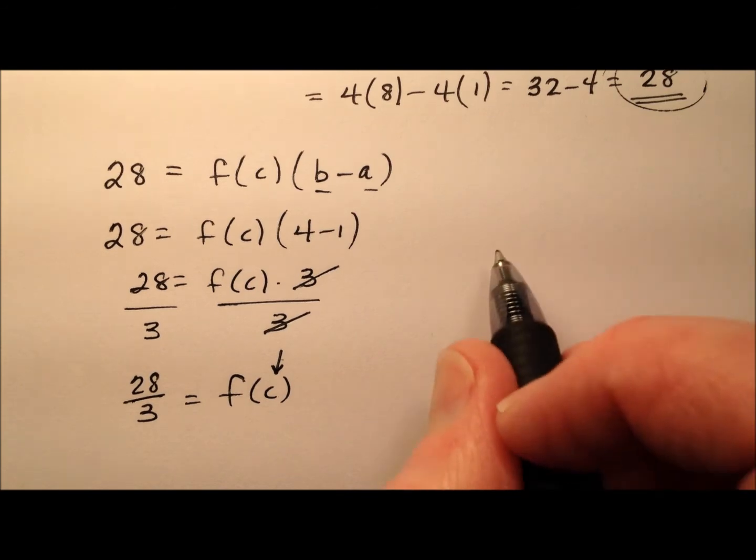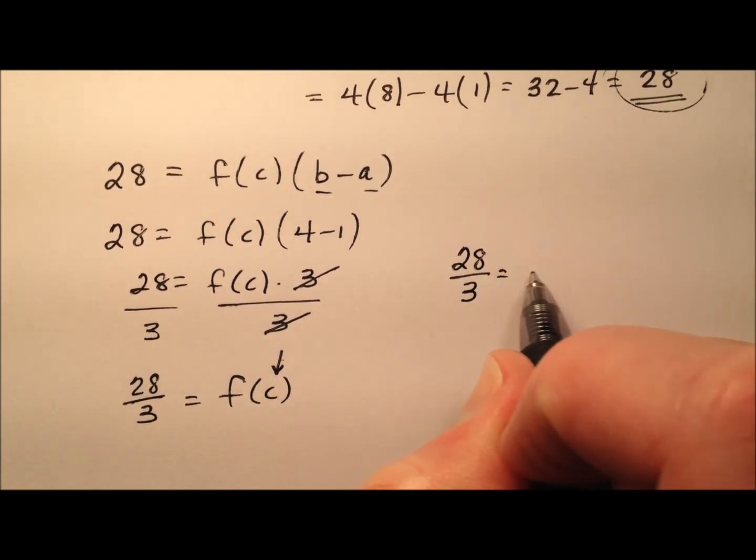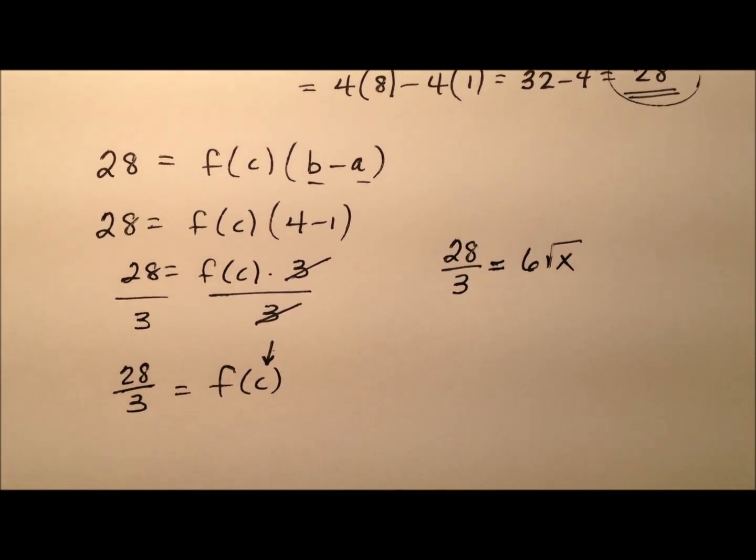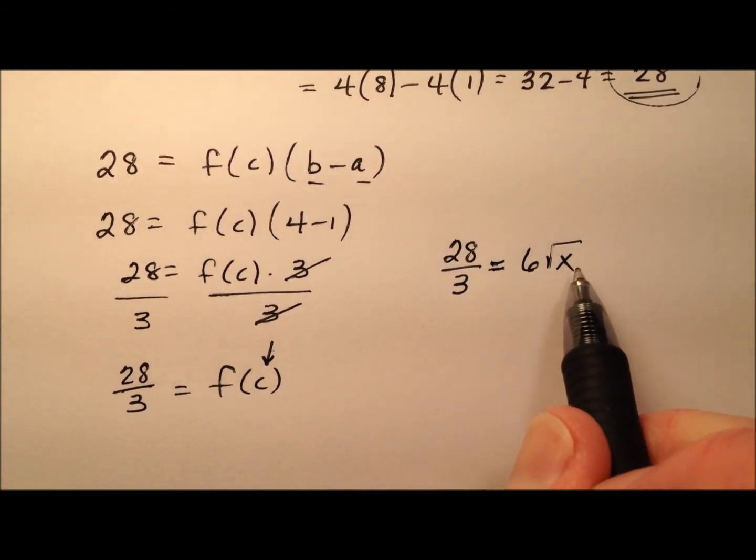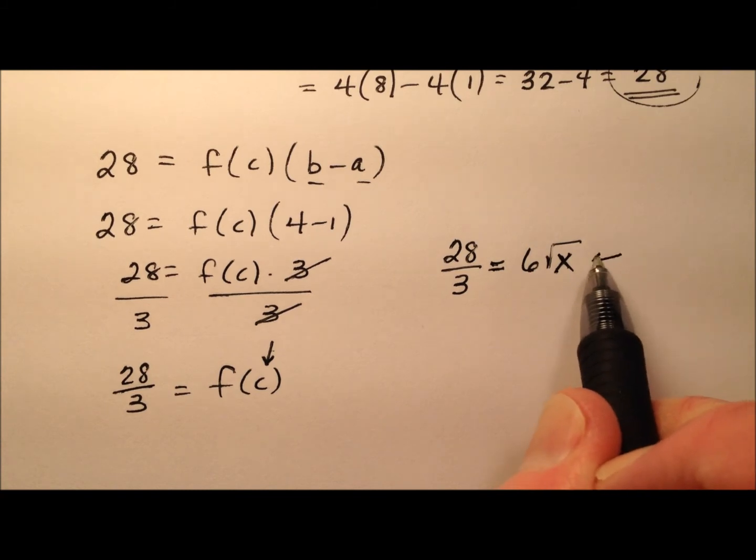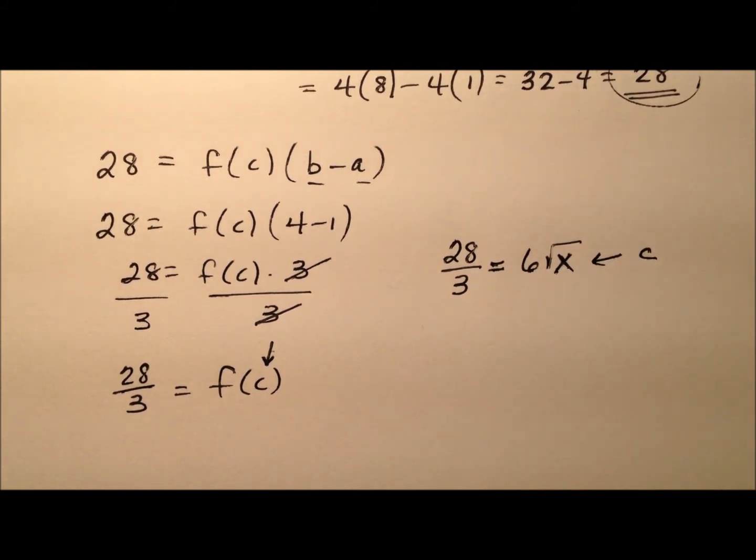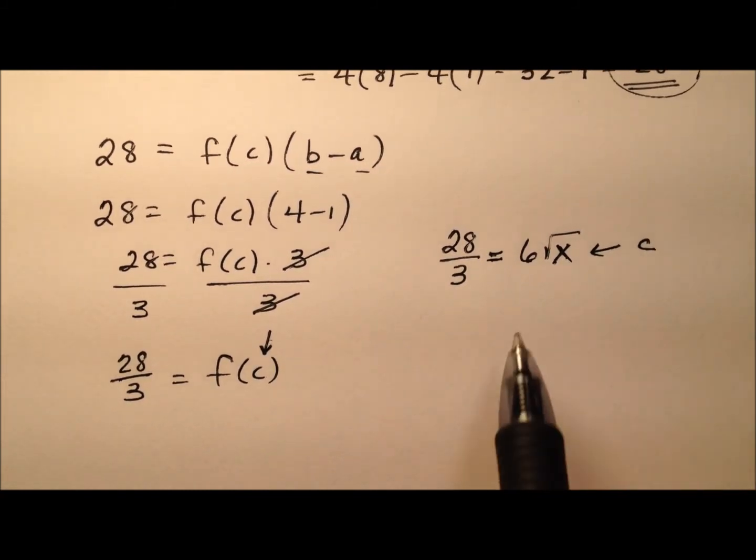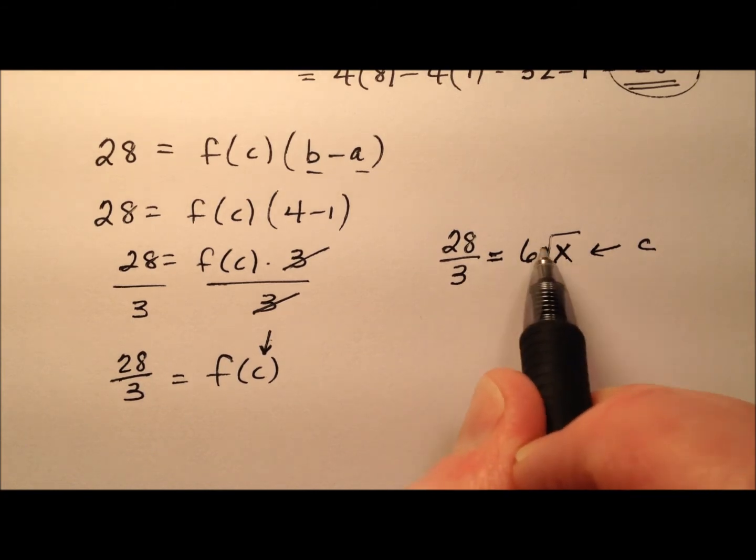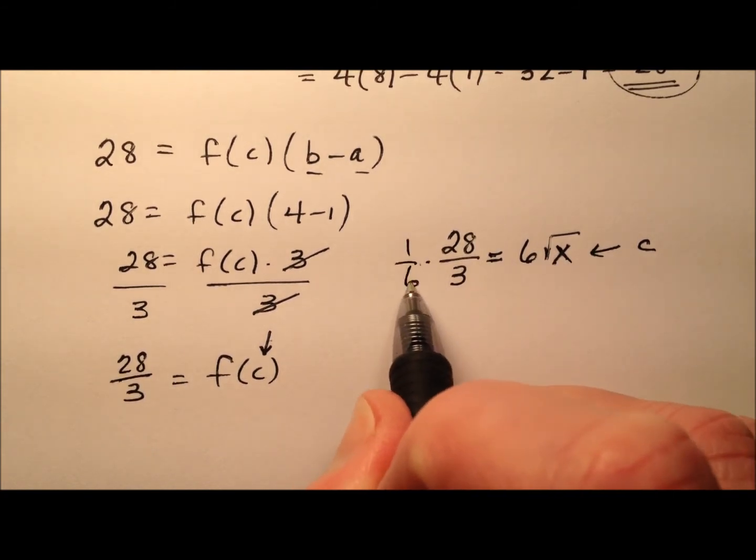f of c equals 28 thirds. So I need to take that 28 thirds and I need to set it equal to our function, which was 6 times the square root of x. This x value here that I'm looking for is actually the c value that's guaranteed.